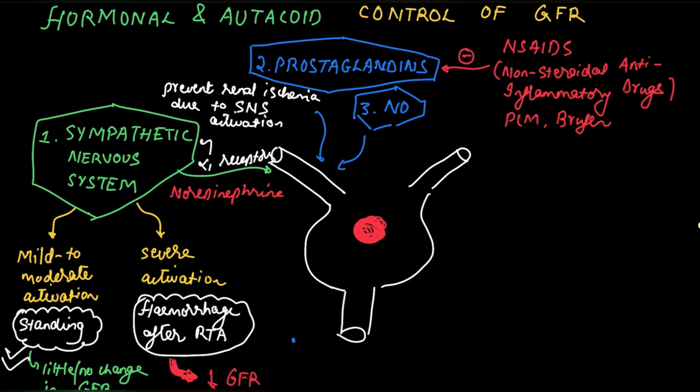Nitric oxide produces vasodilation. It dilates the efferent arteriole and increases the GFR. The fourth agent is angiotensin 2.